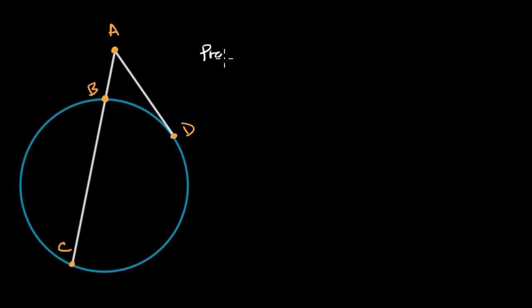What we want to prove in this video is that if we take the product of the length of a secant segment, so that was AC, and the part of that segment that is external to the circle, so AC times AB.